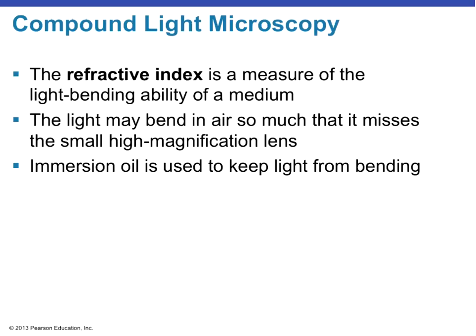The refractive index is the measure of how much light bending is happening in a medium. Light bends in air, so some of it will miss what we're trying to illuminate on a microscope slide. That's why we use immersion oil — it helps keep light from bending out into the air and focuses it on our specimen. By making the wavelength shorter, we get greater magnification and resolution, giving us a much clearer picture.